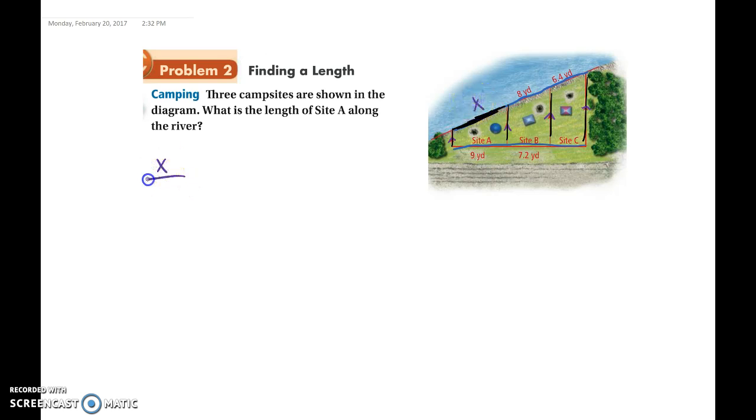So I'm going to say X, the unknown, over top of this eight yards is equal to, so since we did this over this, it would have to go 9 over 7.2.